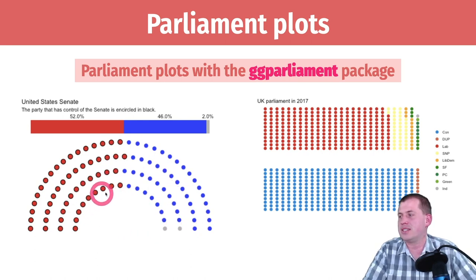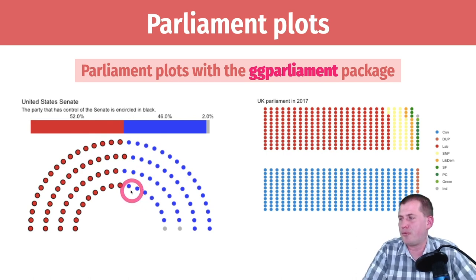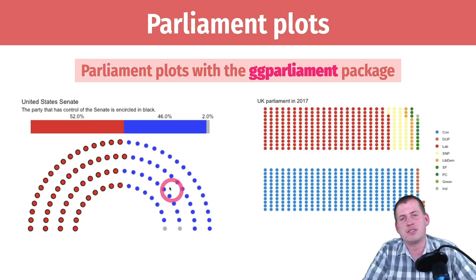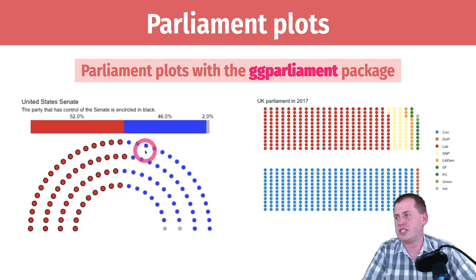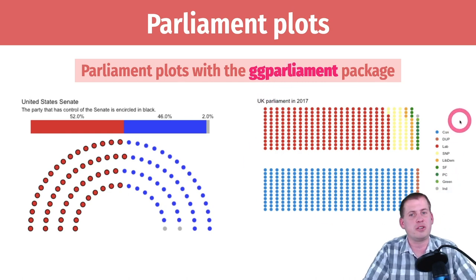Each of these dots represents a seat, so it's a better encoding of the information. You can also use GG Parliament here to make the shapes of other parliaments.